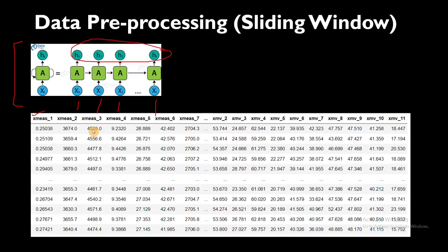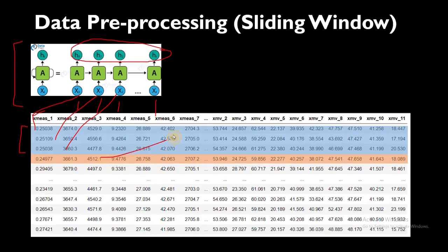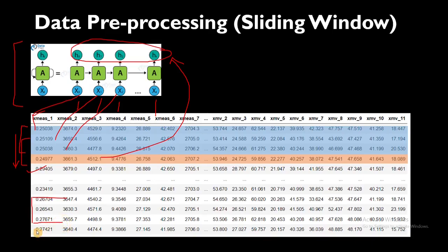We are going to divide the data into sequences. Suppose we want three sequences at a time — that means one, two, three — this will be our input going to the first, second, and third steps, and the output will be the last one. This is called a multi-input single-output problem. This window will keep on moving: three data points as input and the next one as the output we want to predict.